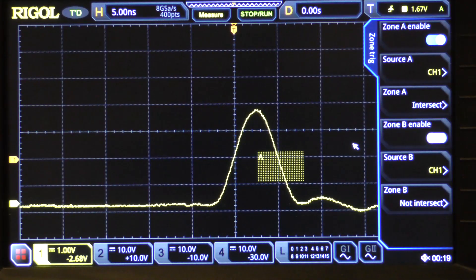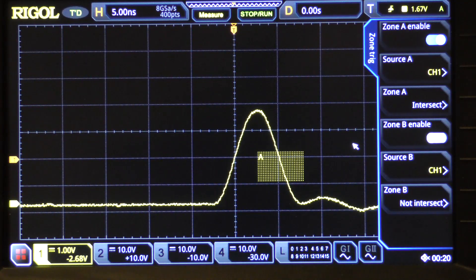Now, I will point out that the zone trigger qualifies a trigger, and it doesn't have to be an edge. It can be a pulse trigger. It can be a timeout trigger. It can even be a protocol trigger. So, perhaps in some future video, we'll have an opportunity to combine zone triggering with some much more advanced trigger system, like perhaps a protocol trigger.